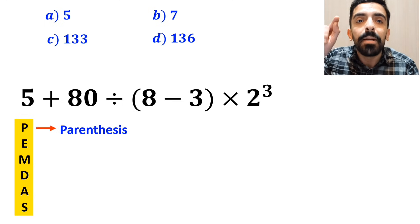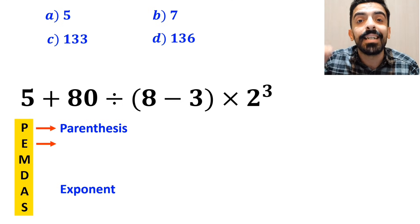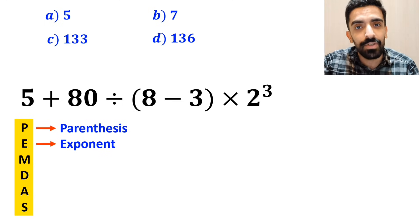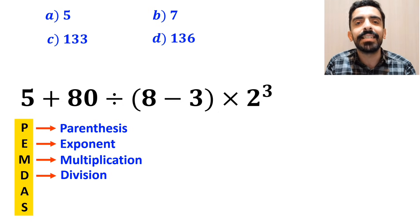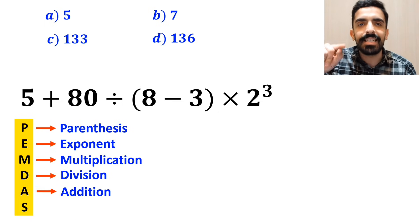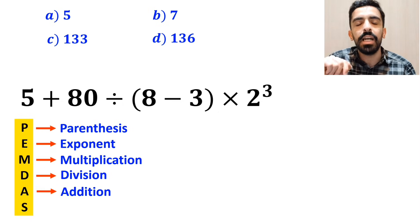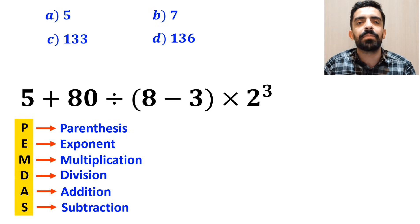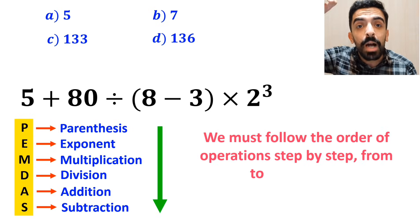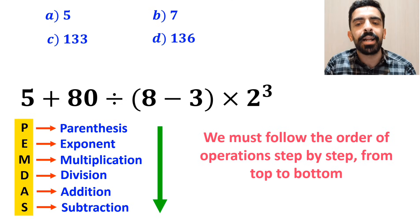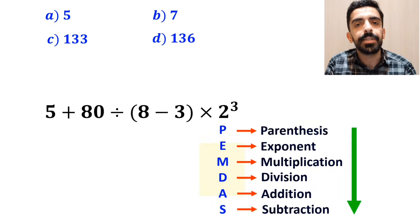In this rule, P stands for parenthesis, E stands for exponent, M stands for multiplication, D stands for division, A stands for addition, and S stands for subtraction. We must follow the order of operations step by step from top to bottom.